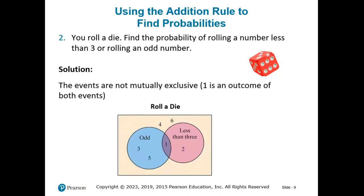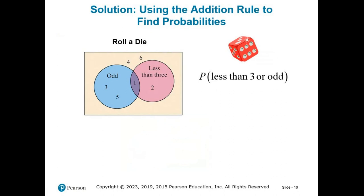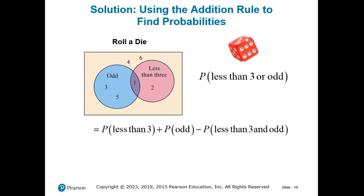So the probability of rolling less than 3 or rolling an odd number equals the probability of rolling less than 3, which is 2/6, plus the probability of rolling an odd number, which is 3/6 — but we have to subtract the overlap. One outcome was in both, so we subtract 1/6. That gives us 2/6 + 3/6 − 1/6 = 4/6, or about 0.667.